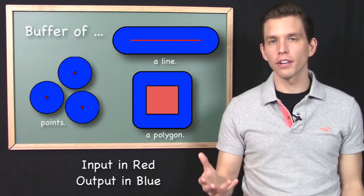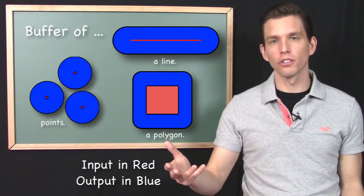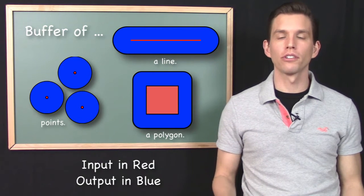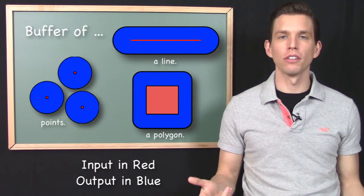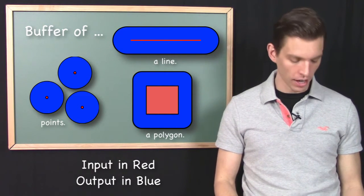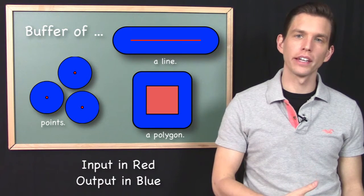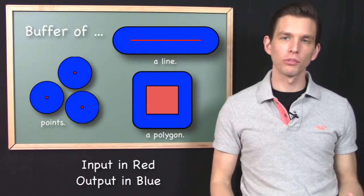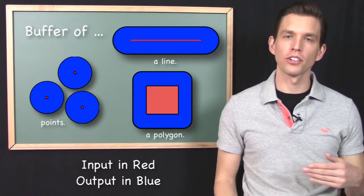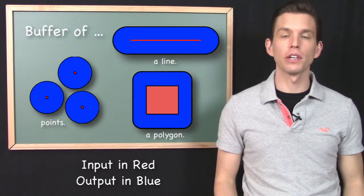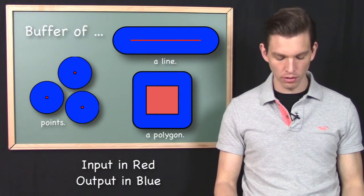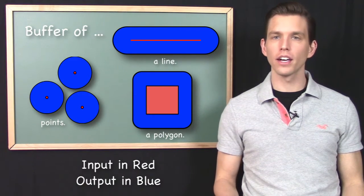But when I show this in the classroom, students frequently raise their hand and ask: why would I ever want to do that? Why would I need to run a buffer operation in my GIS? Well, this is exactly what I'm talking about when I say these are abstract tools. We need to understand them in the abstract, but then we also need to come up with reasons in your particular area of application as to why you would want to do this.